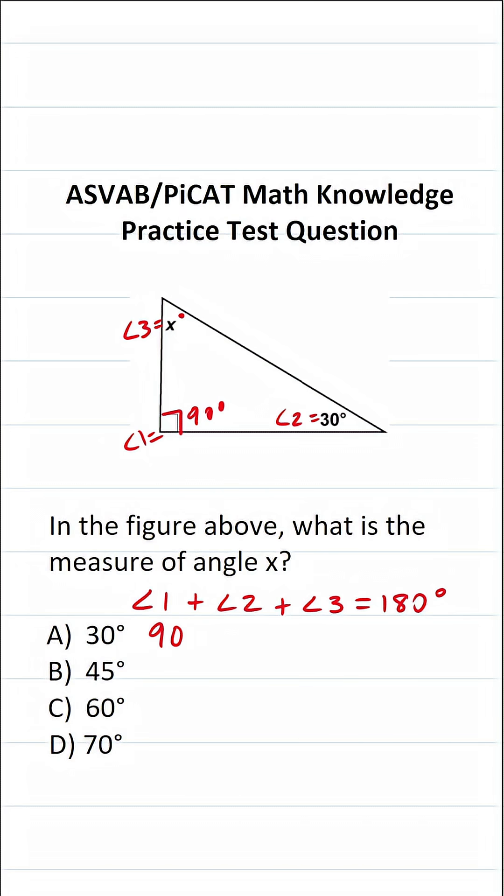This becomes 90 plus 30 plus x equals 180. Clearly, all we have to do is solve this equation for x.